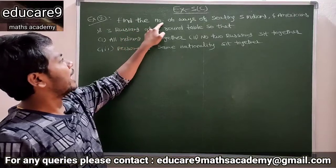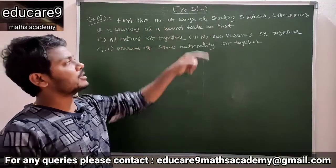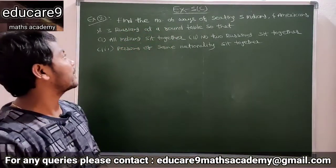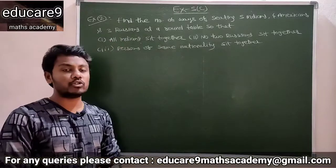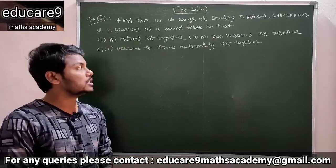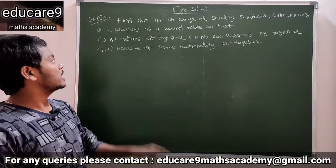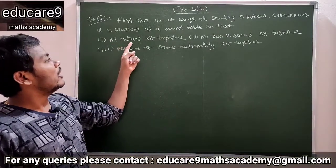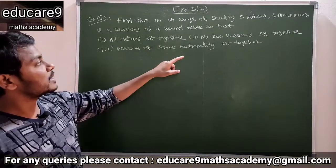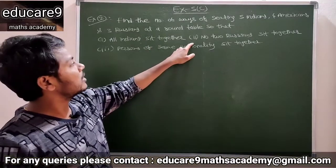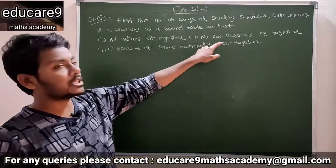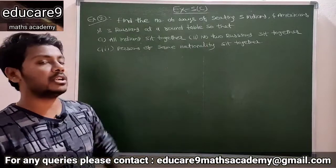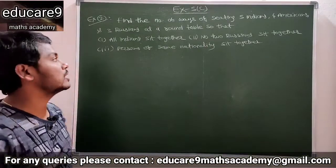Example two: Find the number of ways of sitting five Indians, four Americans, and three Russians at a round table such that — first, all Indians sit together; second, no two Russians sit together; third, persons of the same nation sit together.